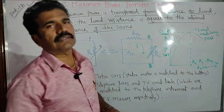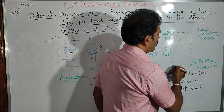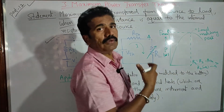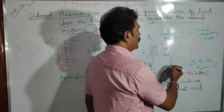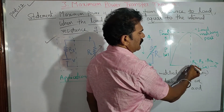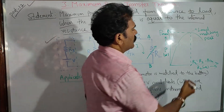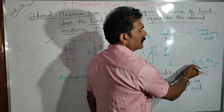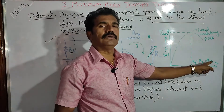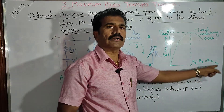Consider the experimental observation in terms of a graph. Since RL is variable, take values of RL along the x-axis. With the increase of the load resistor, the power obtained across RL also increases. We get a curve that reaches a maximum peak at a particular value of RL, and then decreases. This particular load resistance must be equal to the internal resistance RS, or equal to the Thevenin's resistance RTH — that is the maximum power transfer theorem condition.